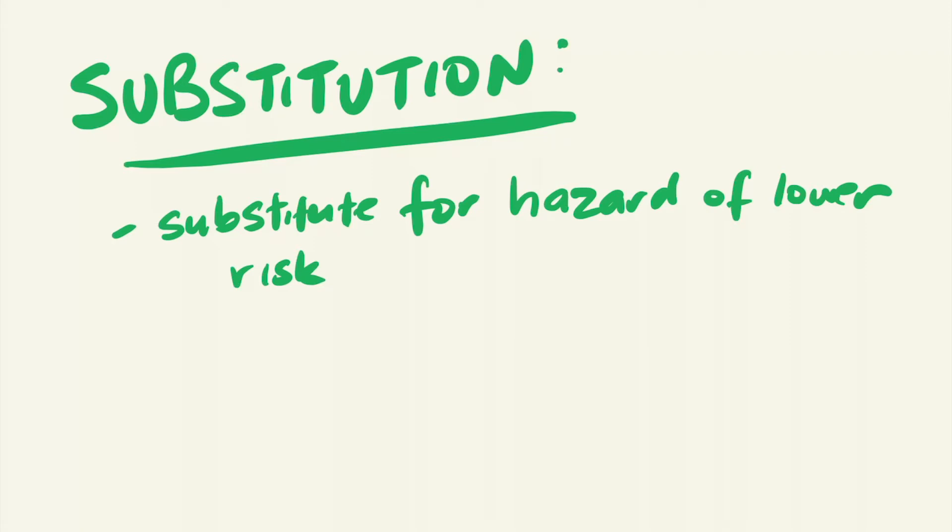If, however, elimination or substitutions are not feasible, then we must move down to the next level which are engineering controls. These controls involve the inclusion of equipment and workplace designs which can be used to minimize the risk of a hazard to the worker. This could involve implementing equipment into the work design.